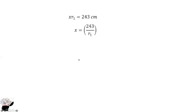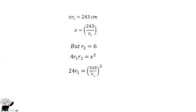Making x the subject from the area equation gives x = 243 / r1. We also know that r2 = 6. Substituting into 4r1r2 = x² gives 4 × r1 × 6 = (243 / r1)², and 4 times 6 is 24, so 24r1 = (243 / r1)².